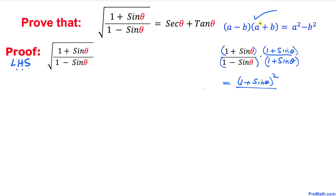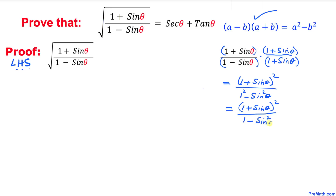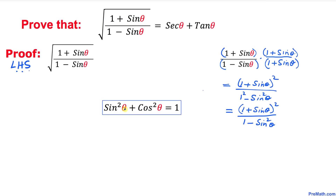We are going to use the well-known difference of squares rule, so the denominator (1 - sin θ)(1 + sin θ) can be written as 1 squared minus sin squared theta, giving us (1 + sin θ)² on top divided by (1 - sin² θ). Now let's recall the famous Pythagorean identity: sin² θ + cos² θ = 1. You have to remember it all the time.